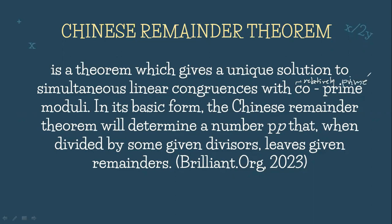What does relatively prime mean? Relatively prime refers to numbers with a GCD of 1. For example, 27 and 5 are relatively prime because the GCD of 27 and 5 is just 1. Meaning, the only number that can divide both of them is 1, which makes them relatively prime. Furthermore, the Chinese Remainder Theorem is also known as one of the jewels of mathematics, created by Sun Tzu.